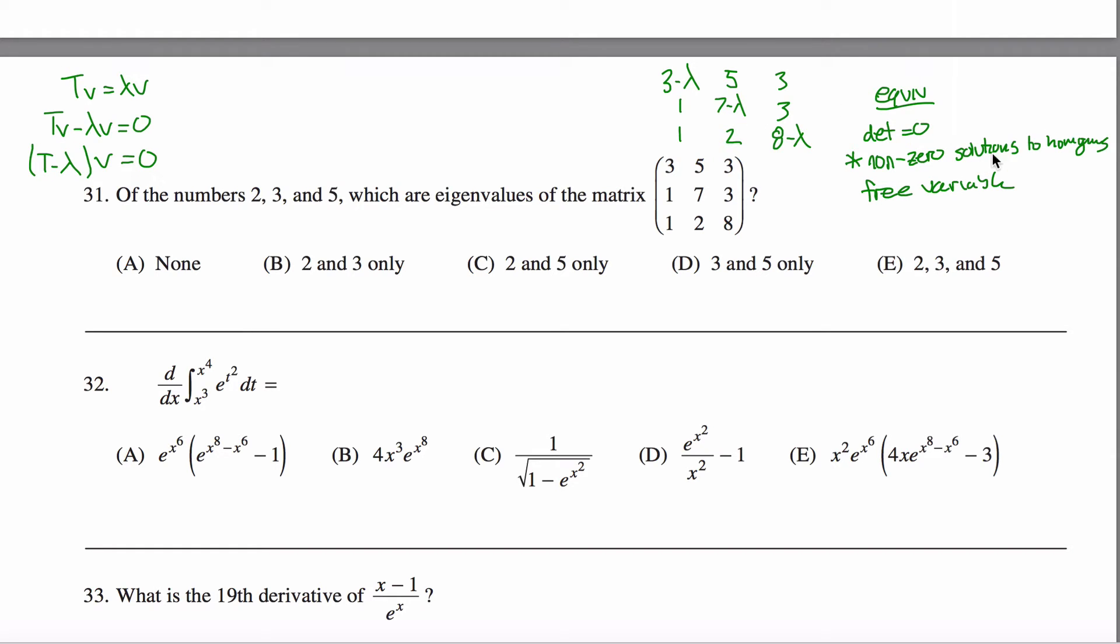then what that means is there are non-zero solutions to the homogenous, and then it satisfies what you need here. So if you can pick a value for lambda in here that'll make the determinant equals 0, we're done.